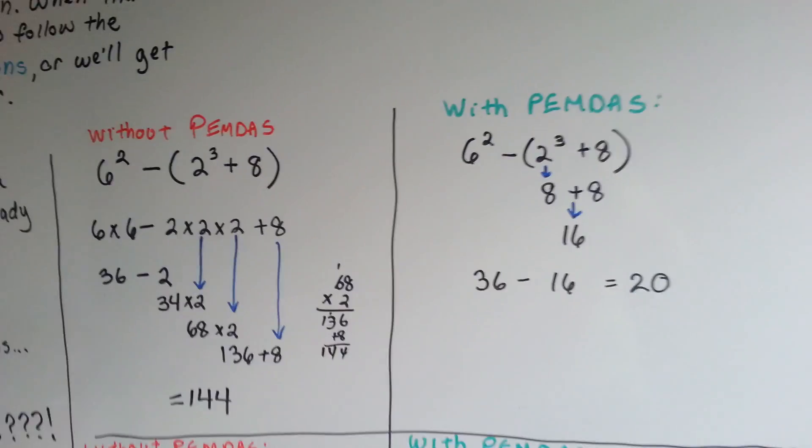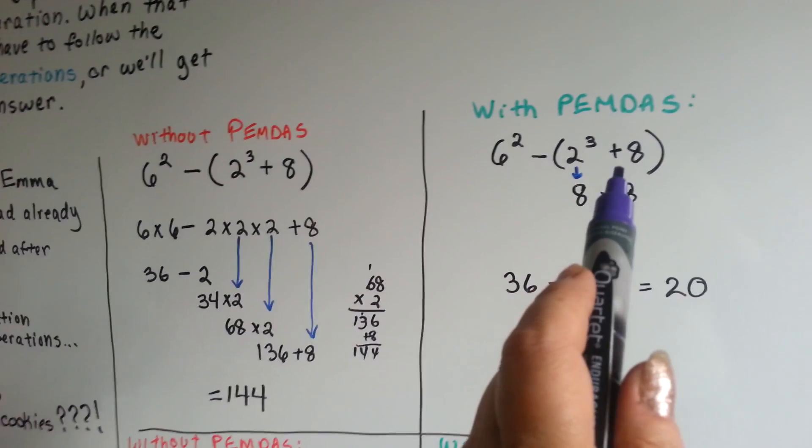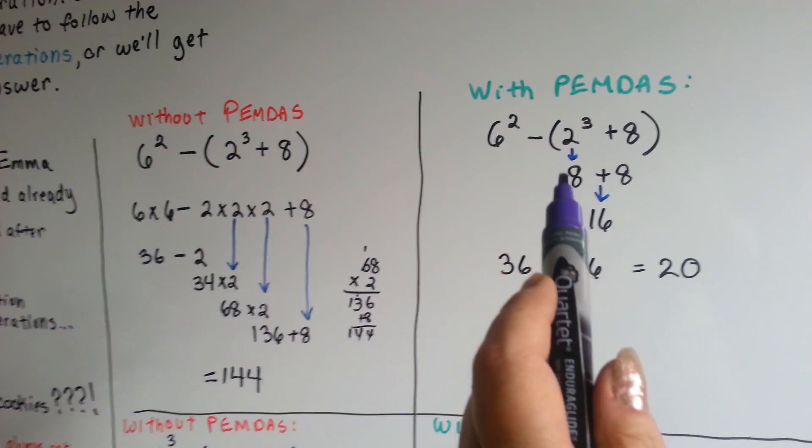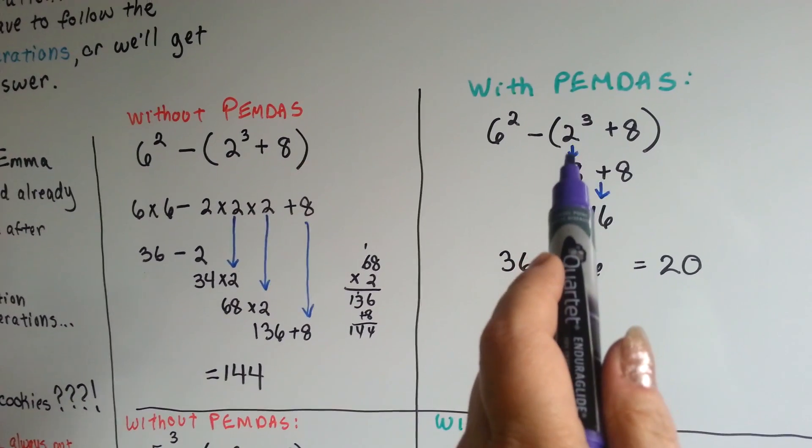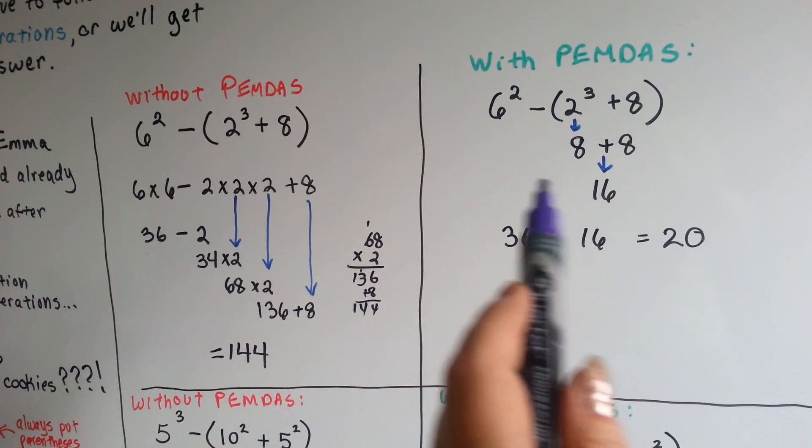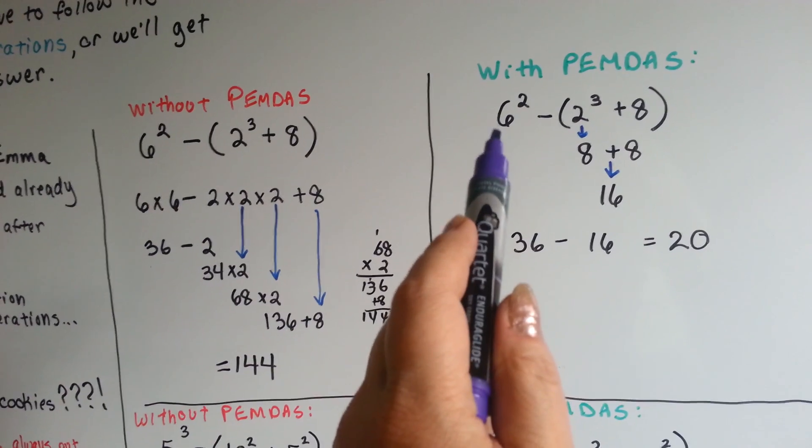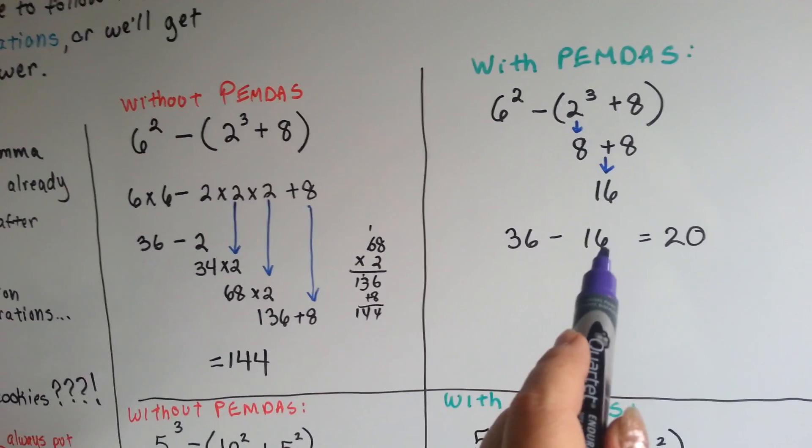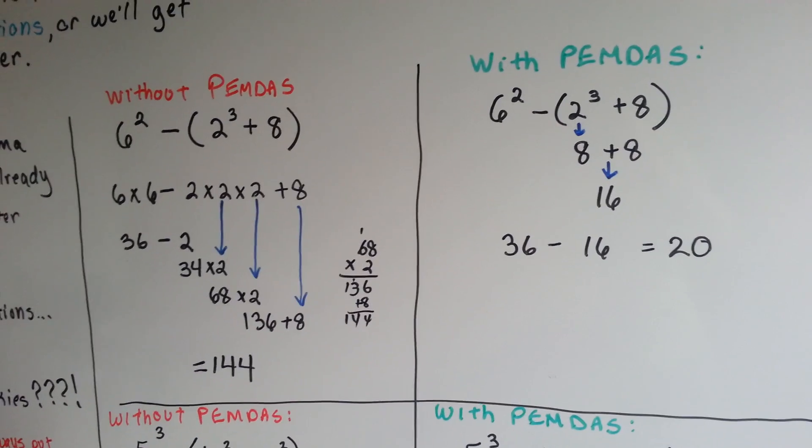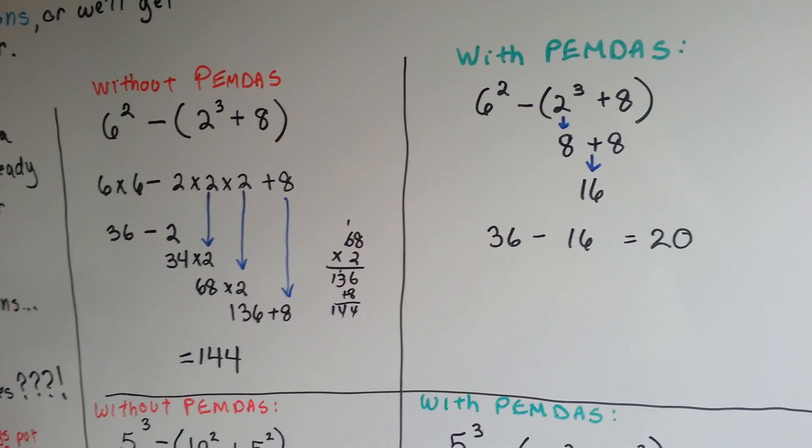Now, what happens if we use PEMDAS? Well, we did what was in the parentheses first, and we did the exponents before that. 2 times 2 times 2 is 8. 2 times 2 is 4, times 2 is 8. 8 plus 8 is 16. Now, we do what's outside of here. And we've got 36 minus 16, which is 20, which is a lot different than 144. Look at how wrong it was.